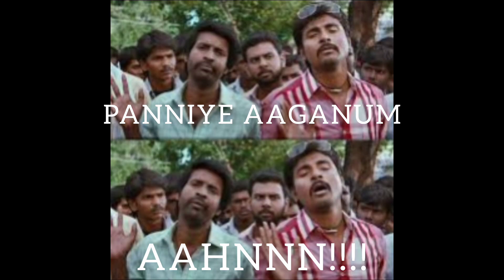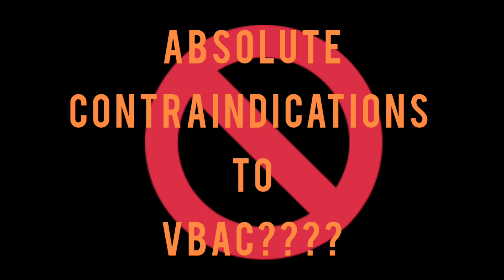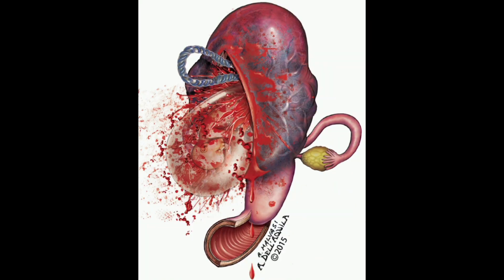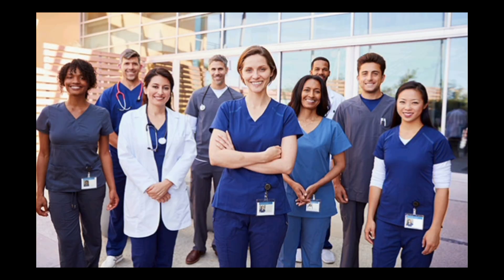Irrespective of previous cesarean section, cases that must be taken for elective cesarean section include: high-risk uterine scars such as two or more previous cesarean scars, inverted T or J incision, classical cesarean section — these scars carry a very high risk of rupture — previous uterine rupture, obstetric complications such as placenta previa, placenta accreta, uterine anomalies, or limited hospital facilities including surgical, anesthesia, nursing, pediatric staff, and blood products.